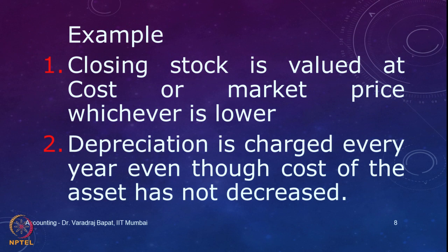But if there is a possible gain but it is not certain, then we will not account for it. Accountants follow a very prudent or conservative path and normally assign a lower value when two values are available. We had seen two examples: because of the application of conservatism the closing stock is to be valued at cost or market value whichever is lesser.